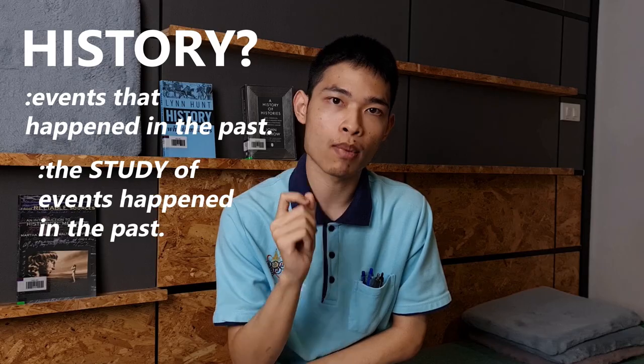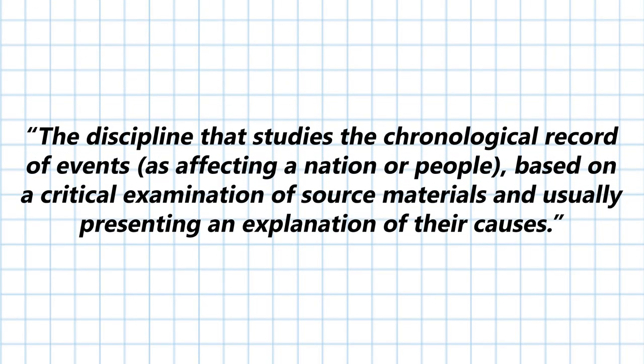So what exactly is history? Well, history is an interesting word because it can mean an event that happened in the past, or a study of events that happened in the past. For the first definition, eating pizza is a history, the study of Napoleon Bonaparte is a history, your grandma's love letter is also a history. For the second definition, the Encyclopedia Britannica defines history as the discipline that studies the chronological records of events as affecting a nation or people, based on a critical examination of source materials and usually presenting an explanation of their causes. So when you study about past events, talk with your friends, or watch The Queen's Gambit on Netflix, you are doing history.